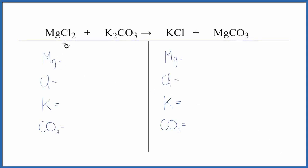In this equation we have MgCl2 plus K2CO3, that's magnesium chloride plus potassium carbonate. And this is a double displacement reaction.